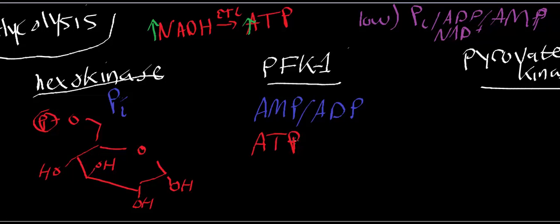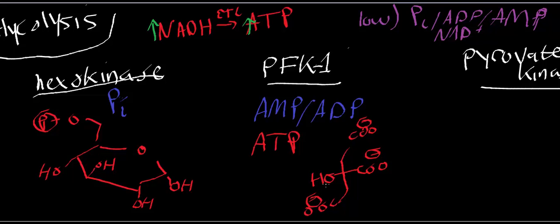There's one more allosteric inhibitor of PFK: citrate. Citrate is the initial substrate formed by citrate synthase in the TCA cycle. If there's lots of citrate around, it means there was a lot of acetyl-CoA. When glycolysis runs heavily, the pyruvate dehydrogenase complex produces a lot of acetyl-CoA, which leads to a lot of citrate. So lots of citrate signals high energy charge, and citrate feeds back to allosterically inhibit PFK.